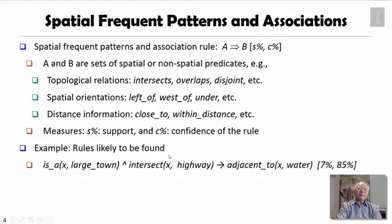The rules we can find could be like if x is a large town and x intersects with the highway, then x is likely to be adjacent to water, like lakes and rivers and oceans, with certain support and confidence.